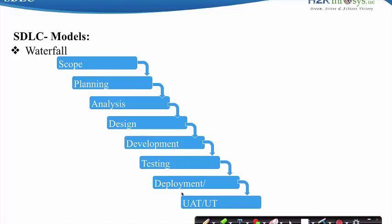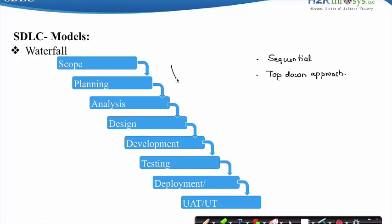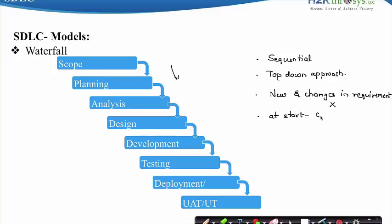The Waterfall Model is a sequential design process wherein all the steps have to be followed in the sequence as mentioned in the SDLC. It is a top-down approach — we start with the scope identification and move towards the user acceptance testing. We cannot go back to previous steps of the software development, and that is why new requirements and changes cannot be accepted mid-project. Clear and complete requirements must be gathered from the client right at the start. This model is applicable for simple and low budget projects.